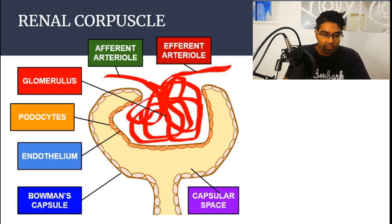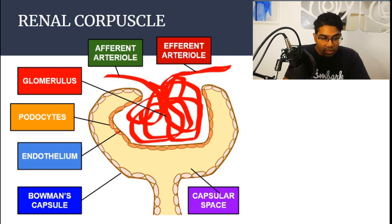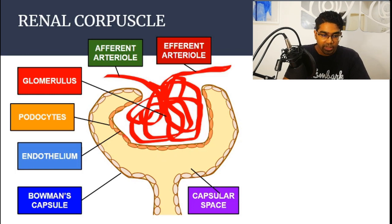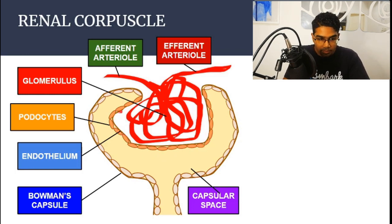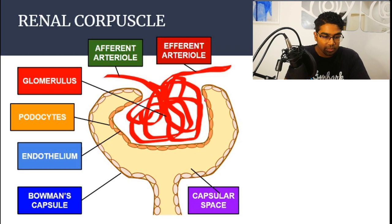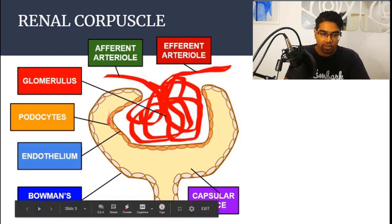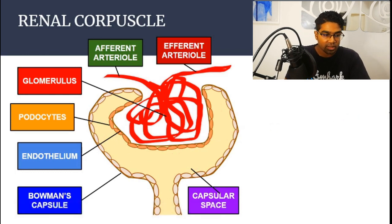Here we have podocytes. Bowman's capsule is made from several different types of cells. These cells in the inner part are podocytes — these are specialized cells. This layer inside, just under the podocytes, is called the endothelium. And then the space inside here is known as the capsular space.